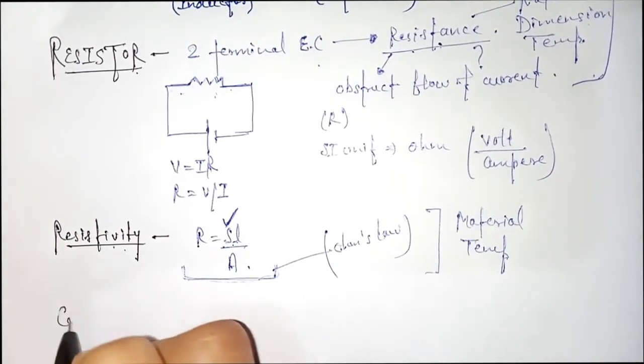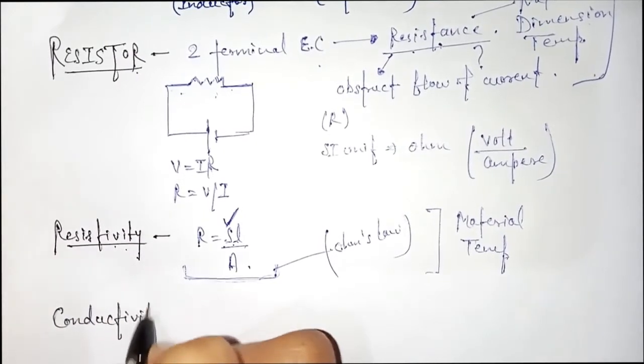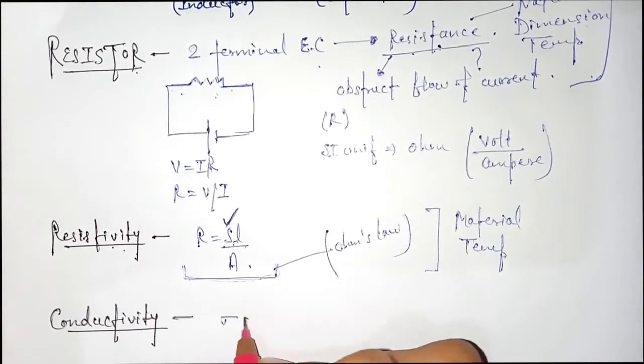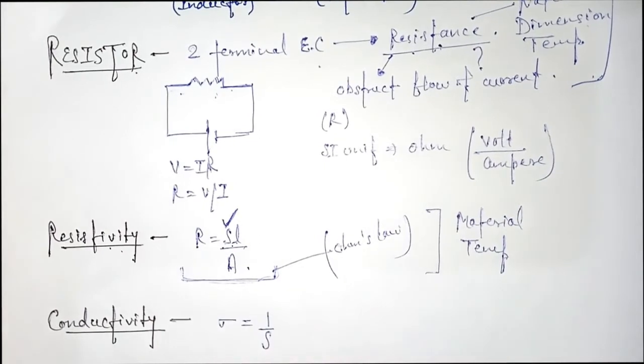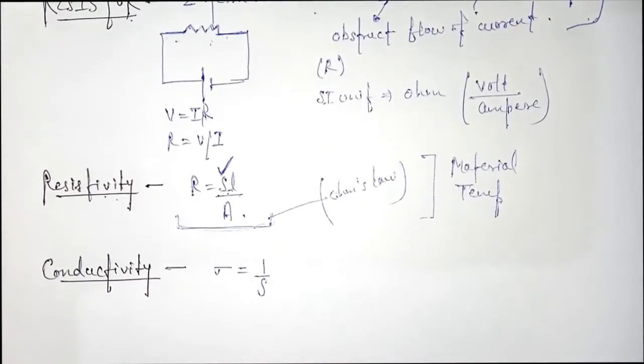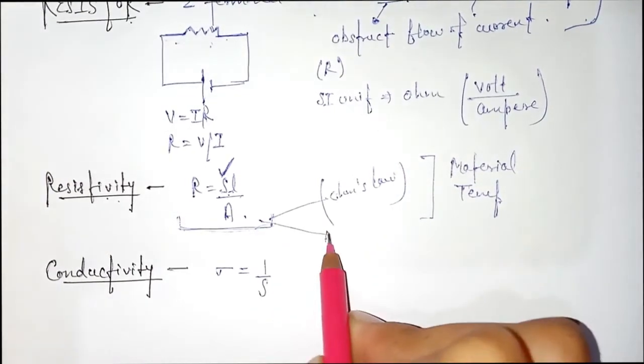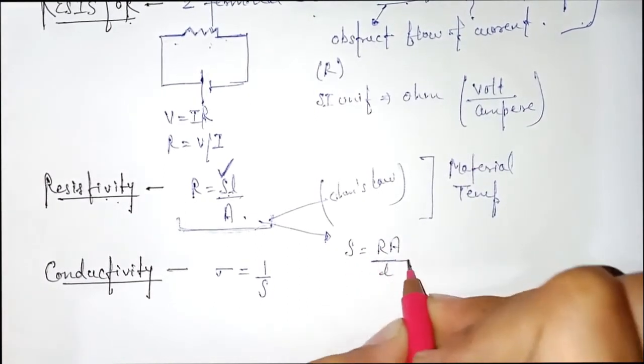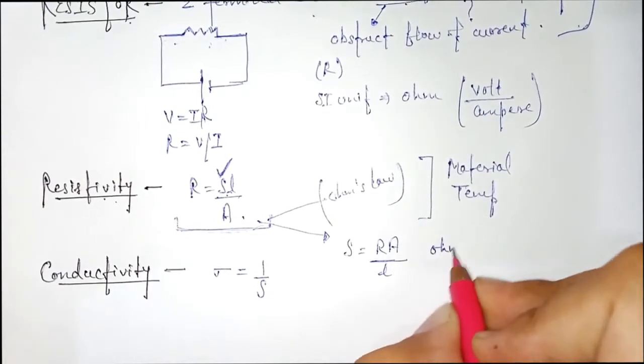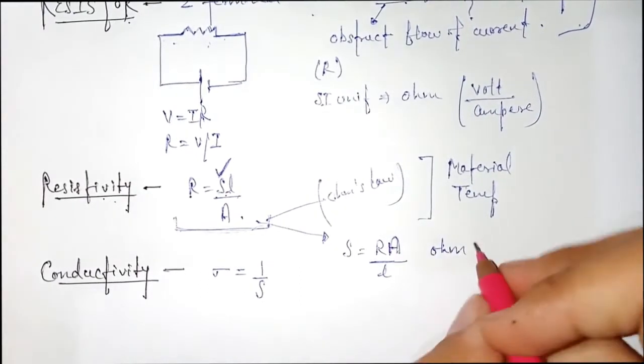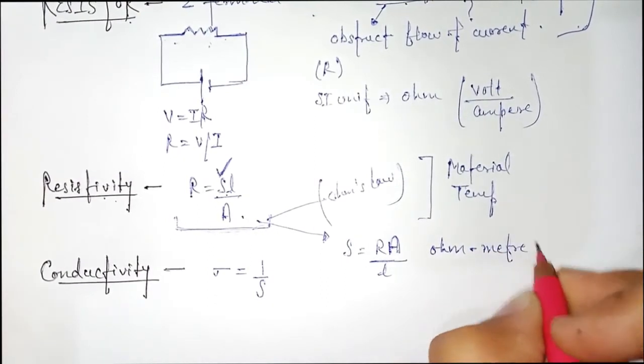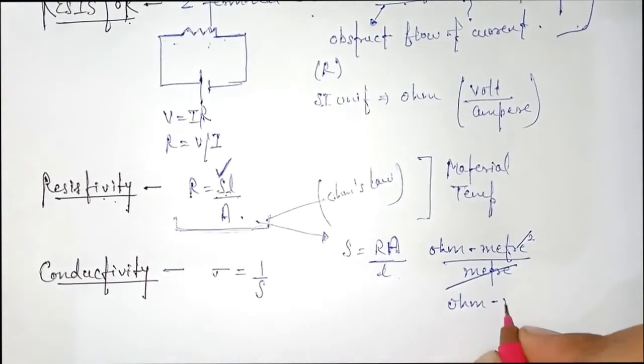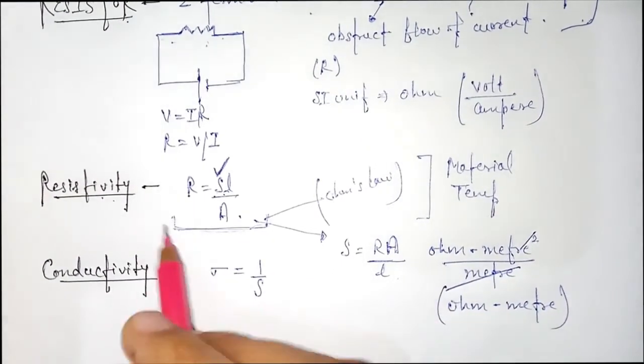Third one is conductivity. Conductivity is the reciprocal of specific resistance, you can say resistivity. From here, rho is equal to R A by L. Unit of R is ohm, A for area is meter square, for length is meter. Thus, SI unit is ohm meter for resistivity.